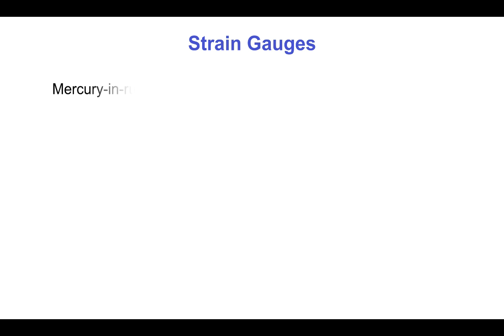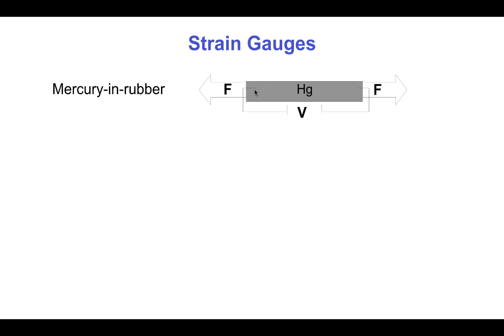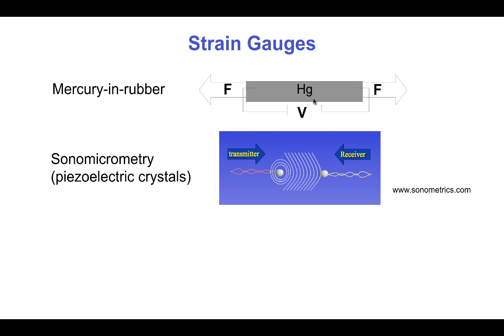Measuring strain in soft tissues is more challenging than in hard engineering materials. One simple soft strain gauge for relatively high strains is the mercury-and-rubber strain gauge — a thin elastic tube filled with mercury connected to a circuit with an imposed voltage. As the gauge stretches with the tissue, the mercury column lengthens and narrows, increasing resistance and decreasing current, which can be calibrated for strain. However, it is a fairly cumbersome device that must be physically attached to the tissue at both ends, and its stiffness may not be negligible for very soft or small tissue samples.